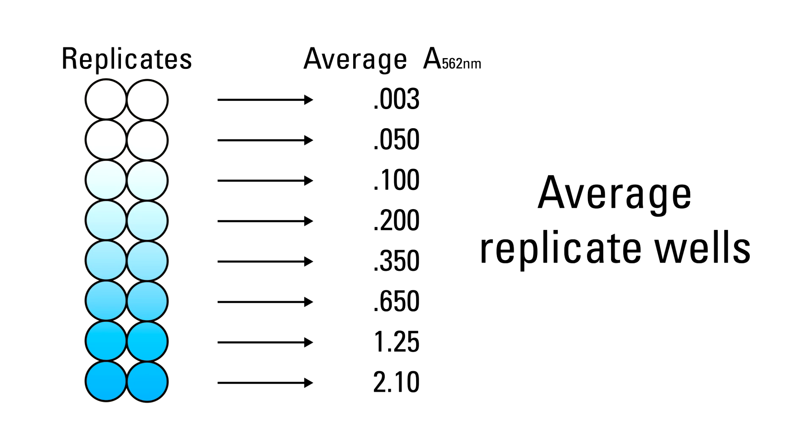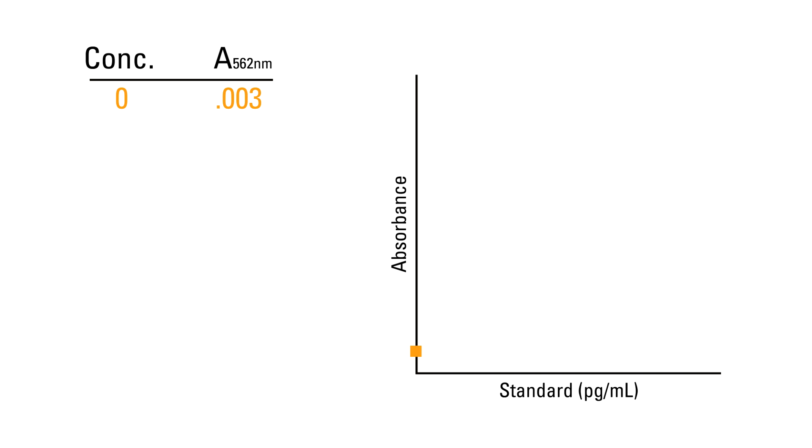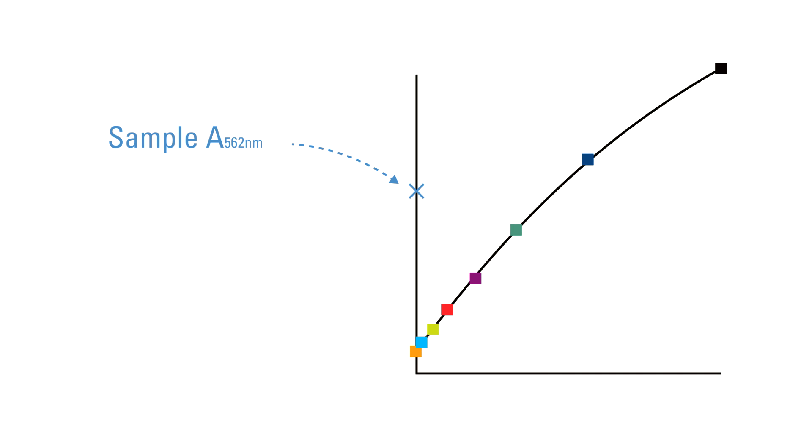Average all replicate values, and generate a standard curve by plotting the mean standard values versus their respective concentrations. Then use the standard curve to interpolate the concentration of each sample based on its mean absorbance value.